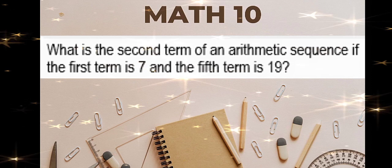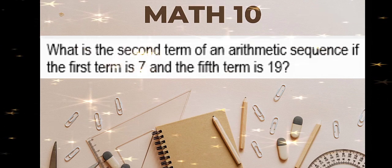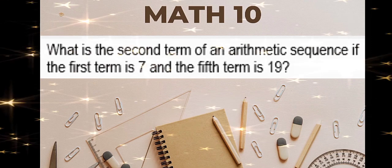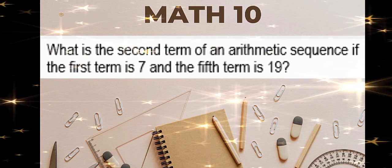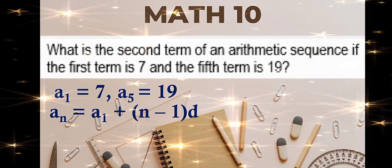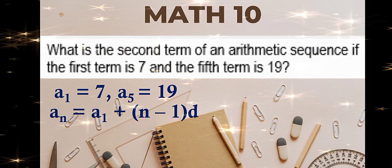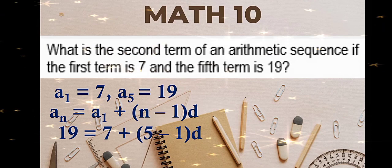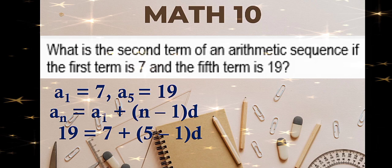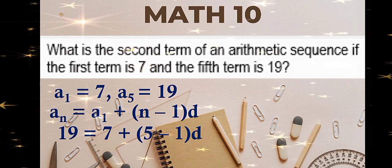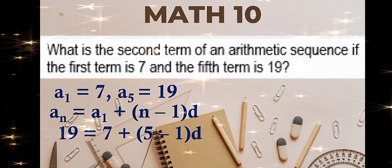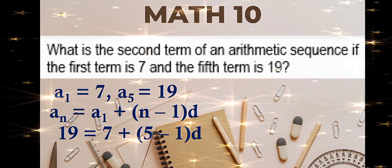What is the second term of an arithmetic sequence if the first term is 7 and the fifth term is 19? Given the first term and the last term which is the fifth term is 19, and we're looking for the second term. We will use the formula for the nth term. So a sub n is 19 (the last term), a sub 1 is 7 (the first term), n is 5 because 19 is the fifth term, minus 1 times the difference. We're looking for the difference first in order to find the second term by adding the first term by the common difference.